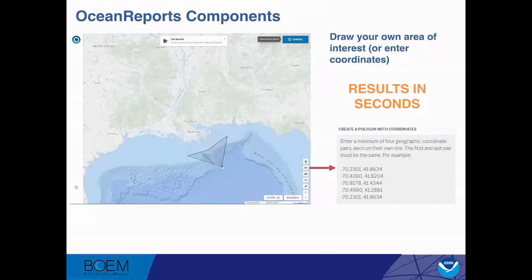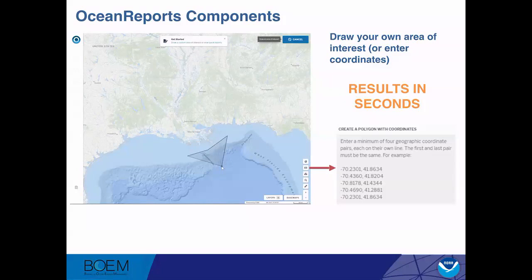The next way is to draw your own. You can draw right on the screen and make any kind of polygon you want — it adapts even if you cross over itself. You can also enter in coordinates using a coordinate tool: copy and paste or type in decimal degrees geographic coordinates, making sure your first and last coordinate match so the polygon can close on itself. Once you've done this, you're going to get results in literally seconds — usually two seconds or less — doing the analysis on all of our data all at one time. You can keep doing this again and again until you get the area or results you're looking for.